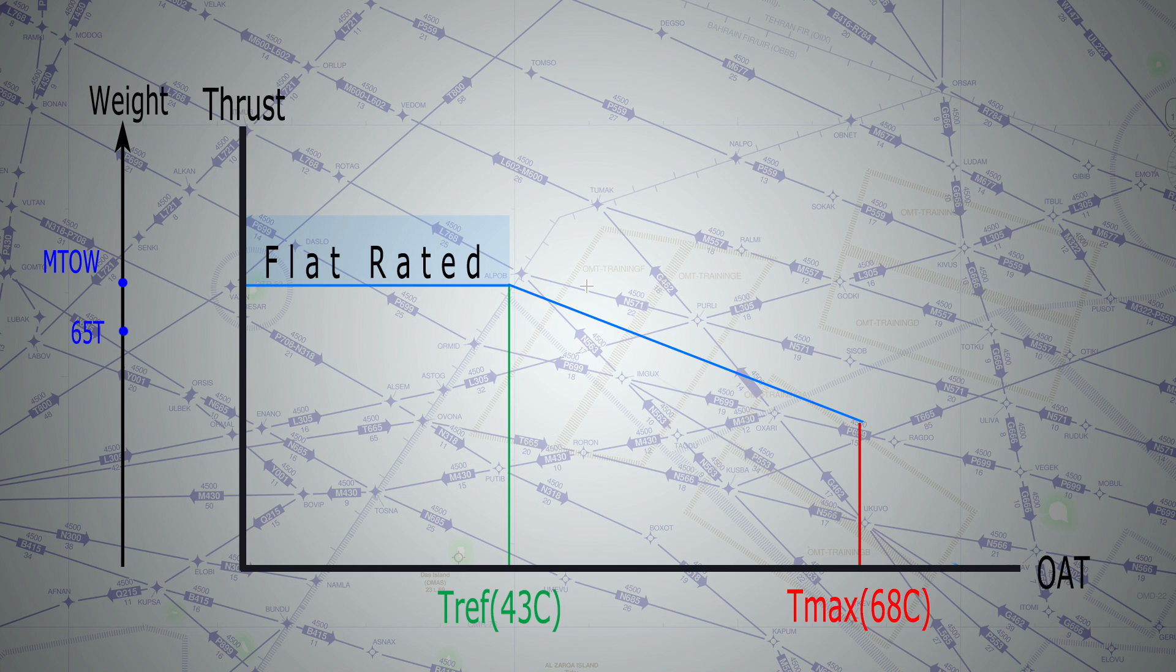However, we go to our aircraft and we receive the load sheet and find out that today's takeoff weight is, say, 65 tons only. So this much weight requires only this much thrust. And the way to tell the FADEC to give us only this much thrust is by putting in a flex temperature that correlates to that weight/thrust, in this case a flex temperature of 63 degrees.